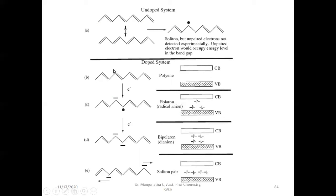This pi bond, both electrons are shifted to this carbon. As a result, you will get negative charge here. And this is a polaron, radical anion is going to form.